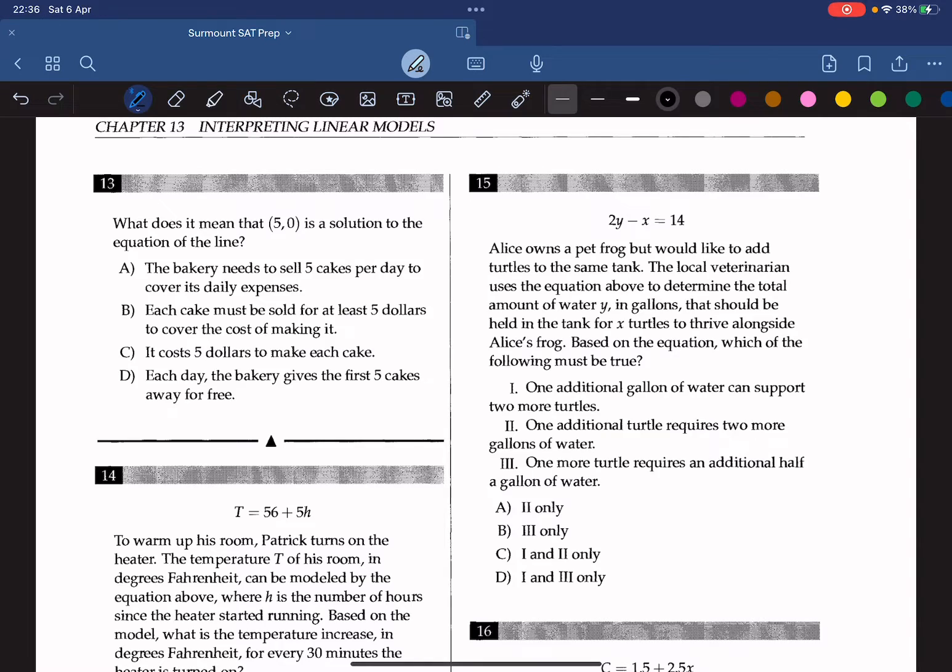Question 13: what does it mean that 5, 0 is a solution to the equation of the line? A solution means that the bakery's daily profit is at a certain number when a certain number of cakes are sold. In this case, we know that x is the number of cakes sold. And so when the daily profit is zero, it means that the store is selling five cakes. So the answer is A.